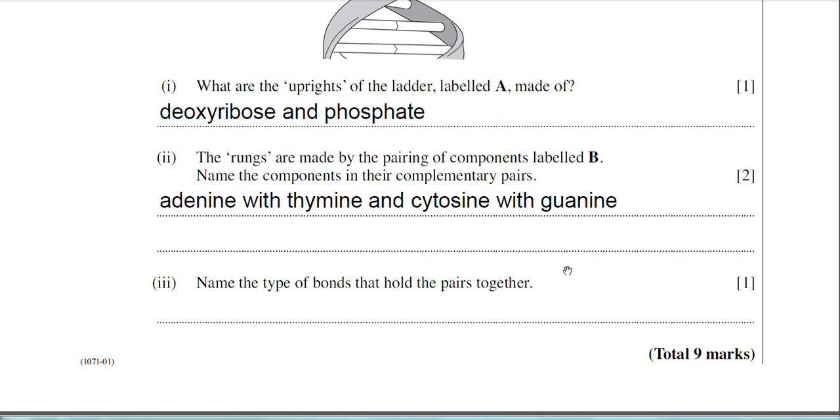So I've typed the answer in there and I've been particularly careful to make sure the examiner understands that I've got them in complementary pairing. What I've done is I've said adenine with thymine, and then cytosine with guanine. So I think that's quite obviously stated in the complementary base pairs there.